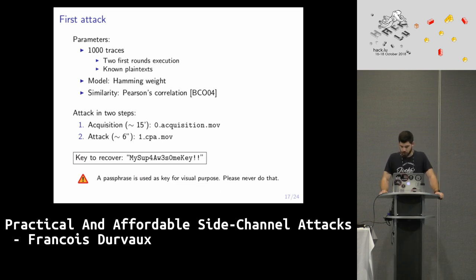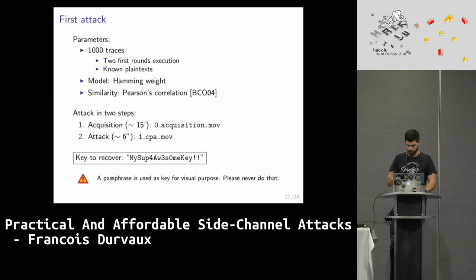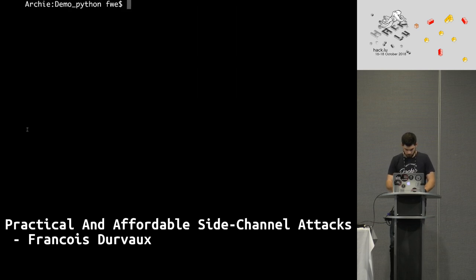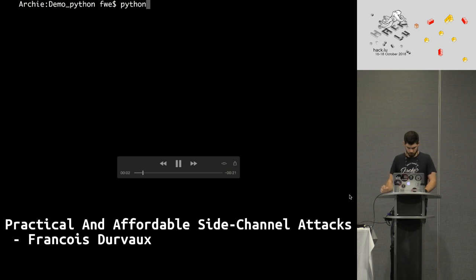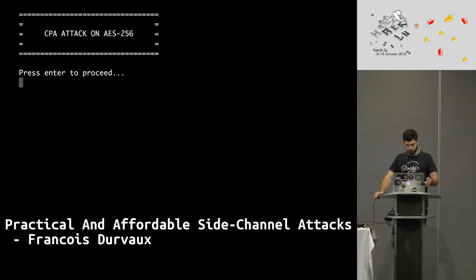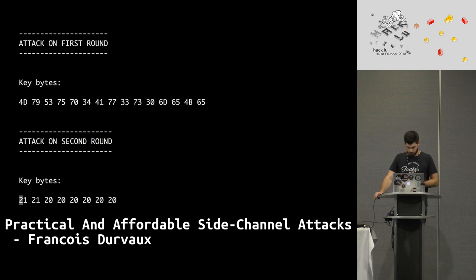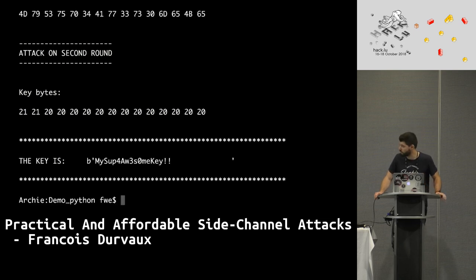For the second part of the attack — taking a thousand traces takes approximately 15 minutes — I apply my Hamming weight model and then the correlation. I load the one thousand traces and my script attacks super quickly. It's just a matter of seconds and I've broken the 256 bits.